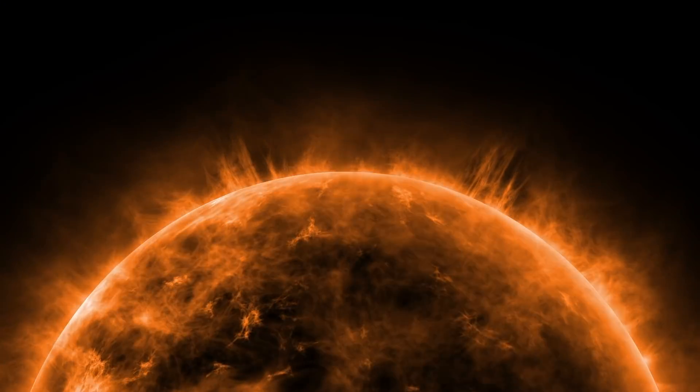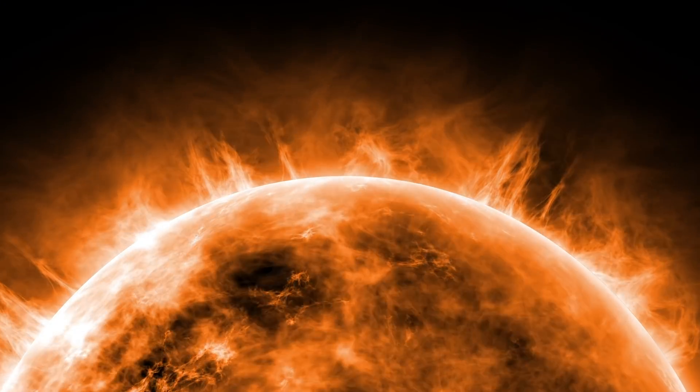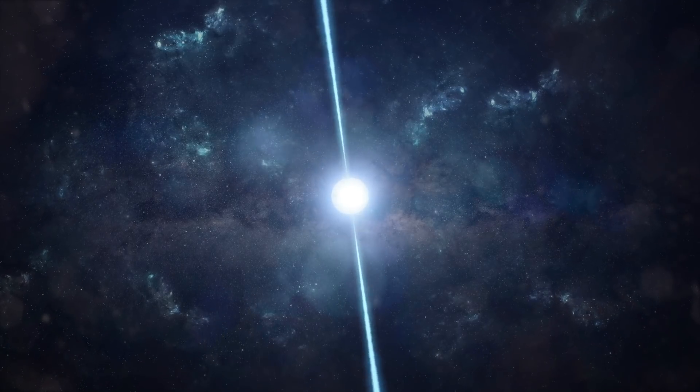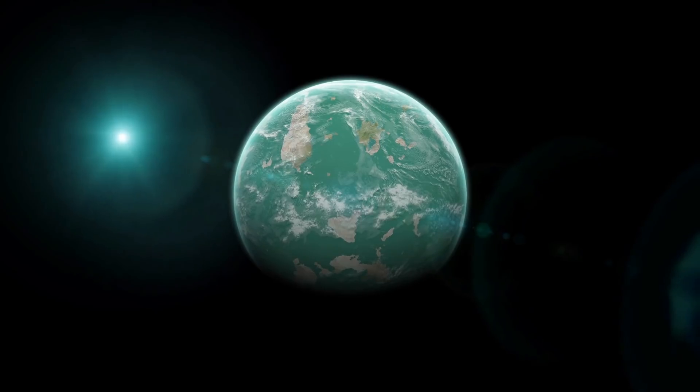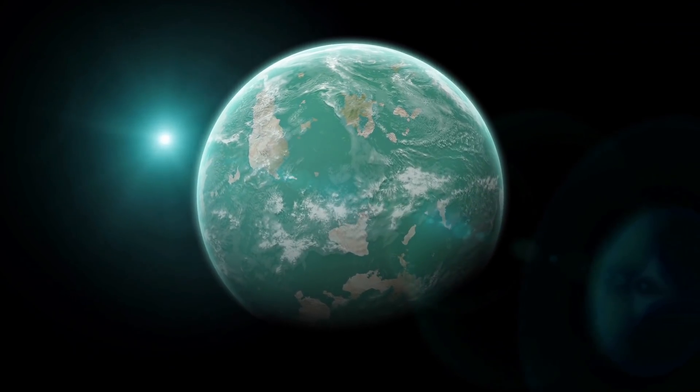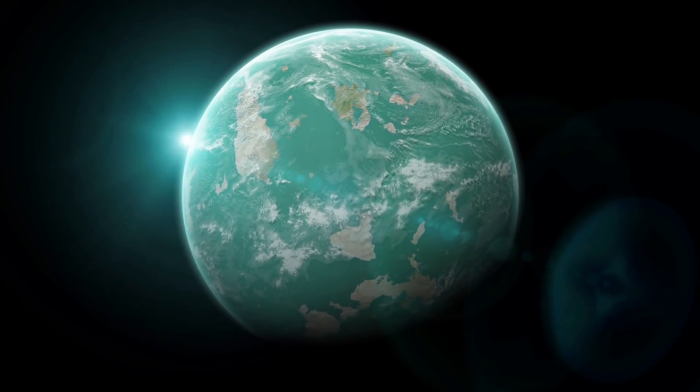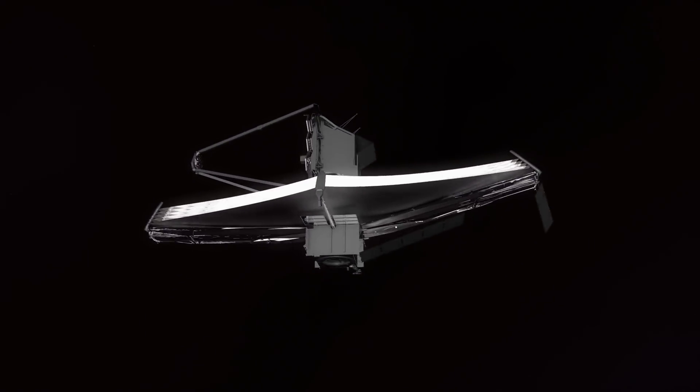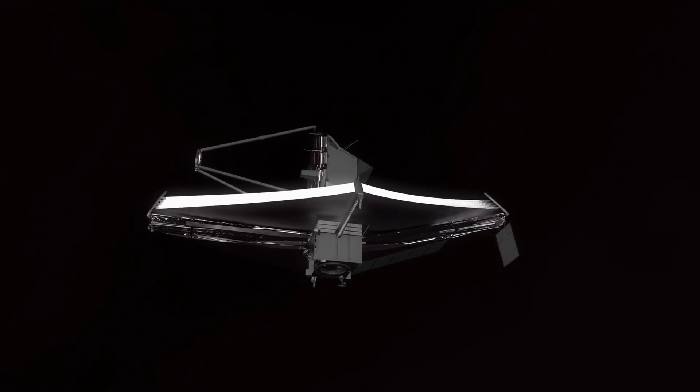The first solar system found outside our own did not involve a main sequence star like our own, but a pulsar. Since then we have found thousands of exoplanets, and we continue to narrow in on smaller and more Earth-like planets. NASA's James Webb Space Telescope is getting ready to give us the best view yet of worlds beyond our own solar system.